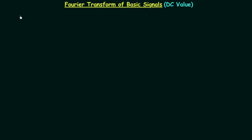In this lecture we will obtain the Fourier transform of DC value equal to A0. We know DC values are not absolutely integrable. So first we will prove A0 is not an absolutely integrable signal, and then we will obtain its Fourier transform.